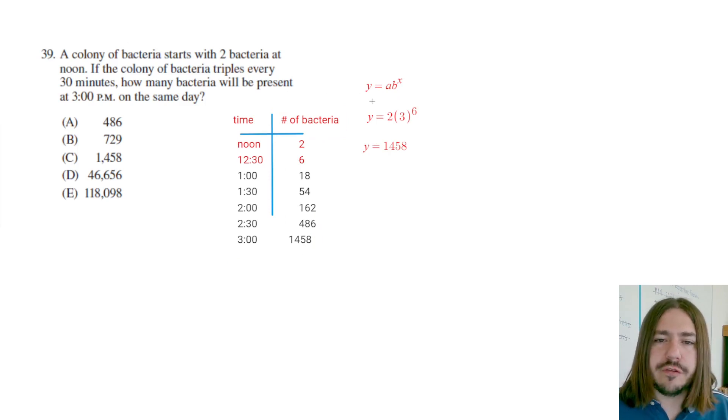But if you're decent with the exponential equations, it is faster to do it that way. So whichever way you decide to do it, we're going to pick C here as our answer. And that's it for number 39. Thanks for watching and have a great day.